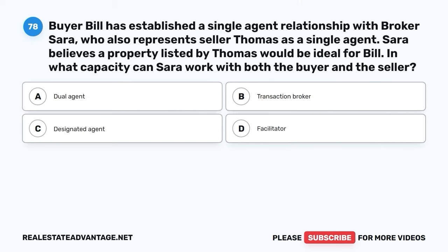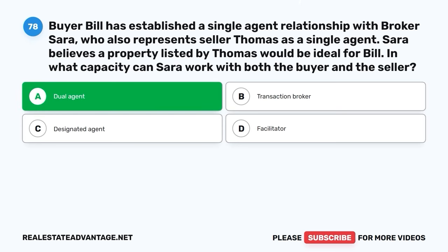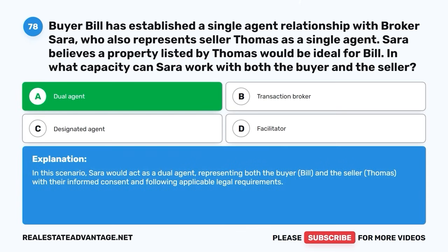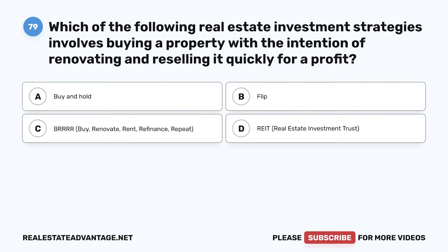Question 78. Buyer Bill has established a single agent relationship with broker Sarah, who also represents seller Thomas as a single agent. Sarah believes a property listed by Thomas would be ideal for Bill. In what capacity can Sarah work with both the buyer and the seller? A. Dual agent. B. Transaction broker. C. Designated agent. D. Facilitator. The correct answer is A: Dual agent. In this scenario, Sarah would act as a dual agent, representing both the buyer Bill and the seller Thomas, with their informed consent and following applicable legal requirements.